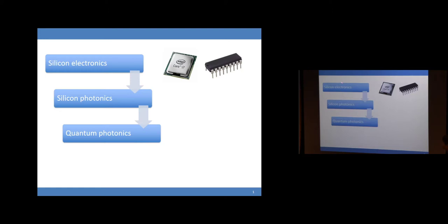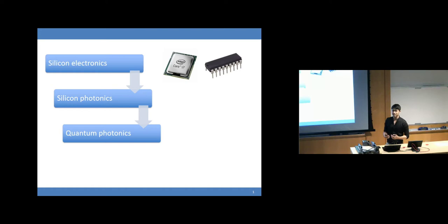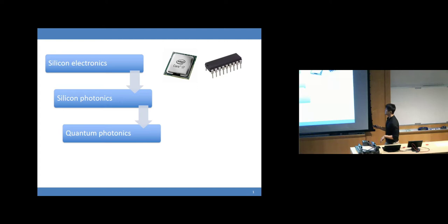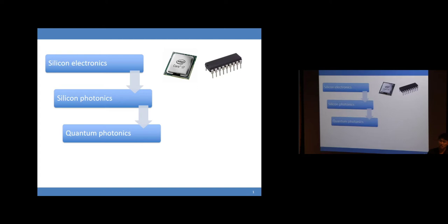First, some introduction on why we need this. Everyone is using nanoelectronics right now — your phone, your laptop, there's a CPU, GPU, microcontrollers, nanoelectronics in all of it. People have decreased the size of a computer from roughly as big as this room to very small. People have done a very good job in silicon electronics. But later, people found that electronics is not very good at high-speed communication, especially over long distance. That's why people started thinking about using light — that's why people developed silicon photonics.